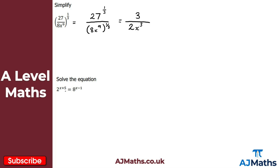For the next one, we're asked to solve the equation: 2 to the power of x plus 5 is equal to 8 to the power of x minus 1. What I want to do here is reduce one of the bases — or sometimes both bases. The base on the left is 2 and on the right is 8. We need to reduce the bases because it's trickier to solve when they are different, but if we can make them both base 2, then because the equation says they're equal, the powers must be equal.